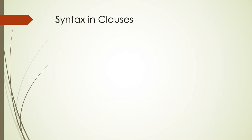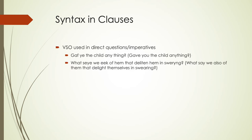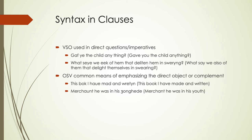Verb-subject-object is sometimes still used in direct questions or imperatives — 'gave you the child anything' rather than 'have you given the child anything,' or 'what say we also of them that delight themselves in swearing.' Object-subject-verb is used for emphasis — 'this book I have made and written,' or 'merchant he was in his youth.' We can still use some of these kinds of constructions in present-day English occasionally, but we don't really see them very commonly.